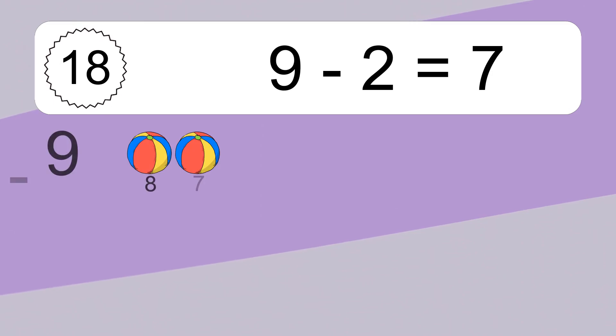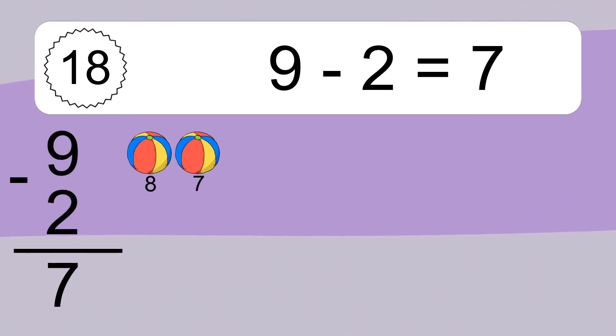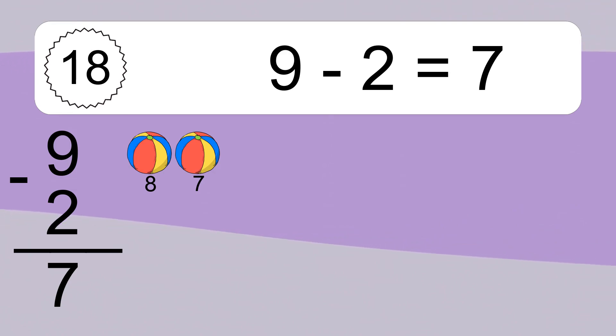9 minus 2 equals what? 9 minus 2 equals 7. Let's count it. 8, 7.